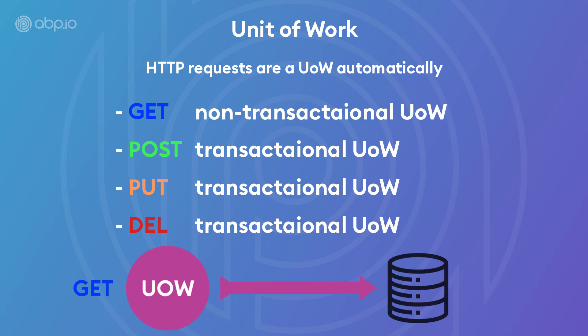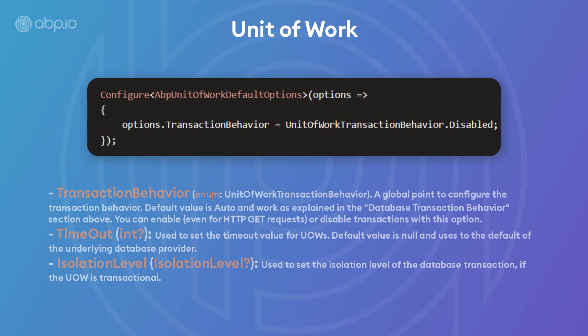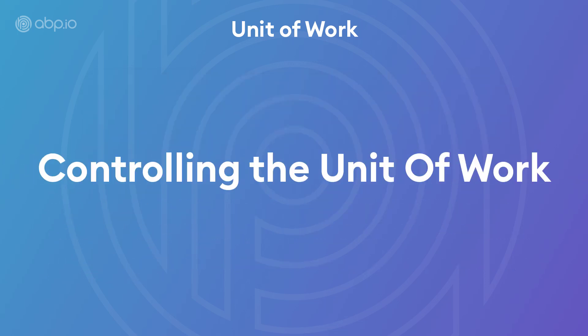We can also configure the transaction behavior, timeout, and the isolation level values by configuring the ABP unit of work default options. In some cases, you may want to change the conventional transaction scope, create inner scopes, or fine-control the transaction behavior. Let's see how we can do that.